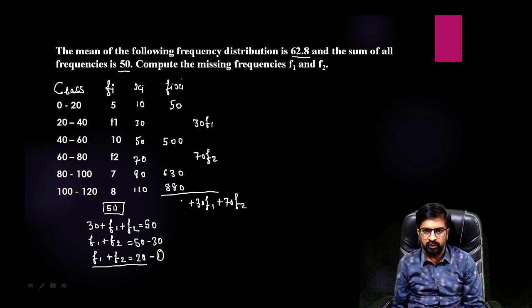And here if you will add this, 0, here 5 and 3 is 8, 8 plus 8 is 16 carry 1, and 6 and 6 is 12, 12 and 8 is 20. This will be your sum of fi xi. Now we are having the formula that is x bar mean, then sum of fi xi upon sum of fi. This is the formula for finding mean by direct method.